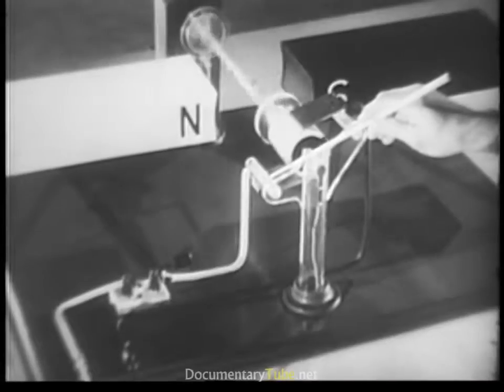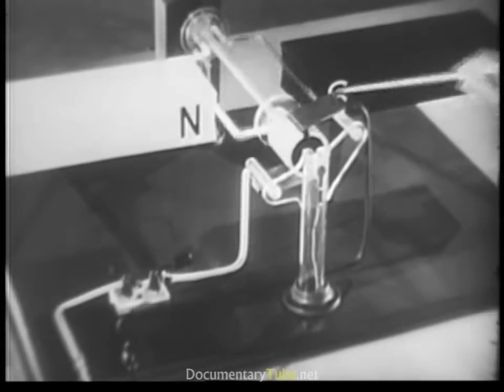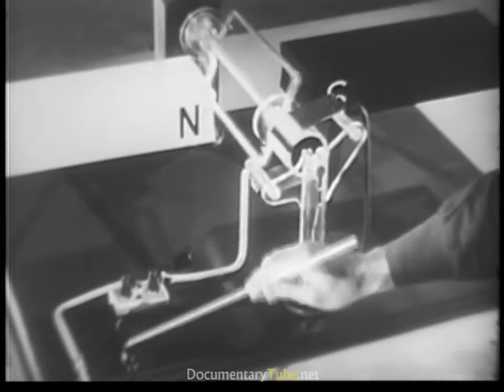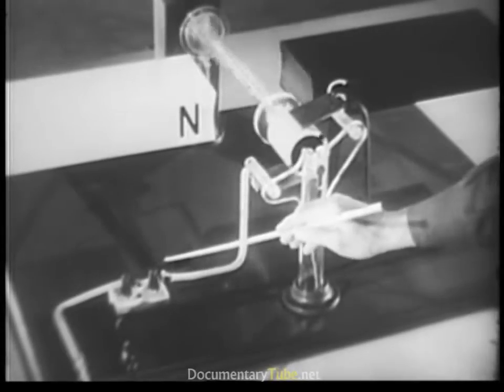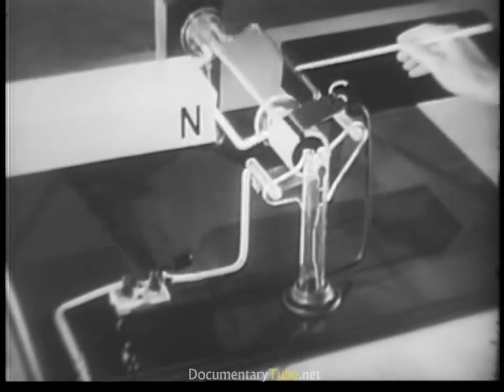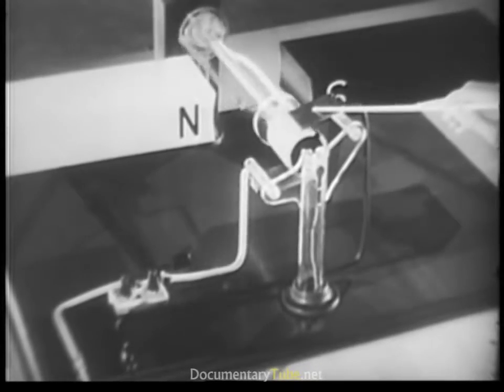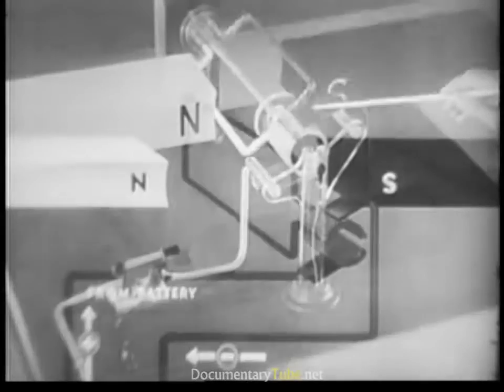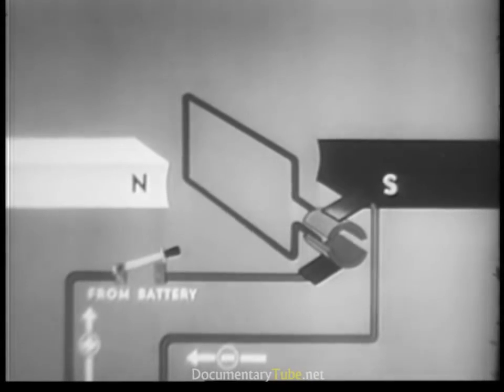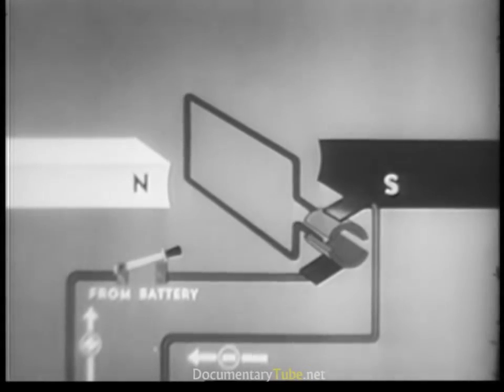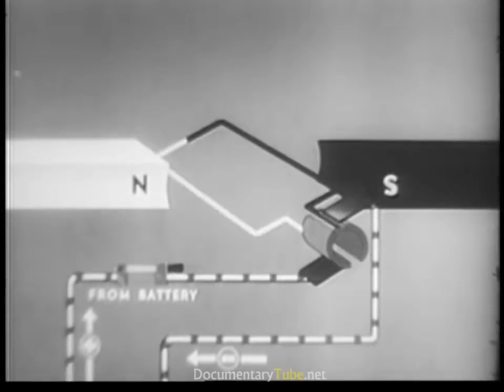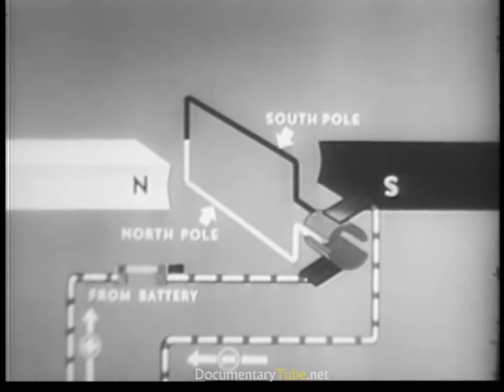The brushes are wired to the source of electric power, the battery. When the switch is on, current always enters the wire loop through this brush, then returns to the battery via this brush. Let's see how it works out. As soon as current starts to flow through the wire loop, it becomes an electromagnet with a north pole and a south pole.